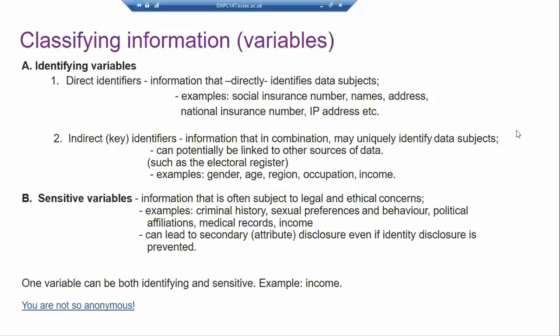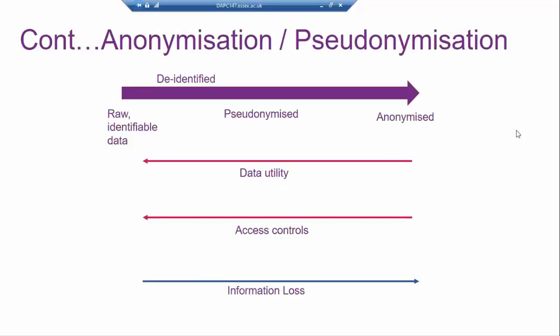This was a classification of all the different types of information we can find in data that we'd be concerned with in the process of anonymization when putting together a data anonymization plan. We're going to have examples and look at this further.